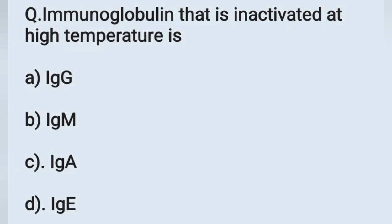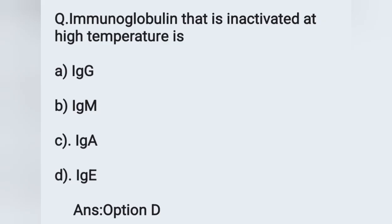The next question: Immunoglobulin that is inactive at high temperatures — option A: IgG, option B: IgM, option C: IgA, option D: IgE. IgE immunoglobulins are active during allergic reactions or anaphylaxis, but are inactive at high temperatures. The correct answer is option D: IgE.